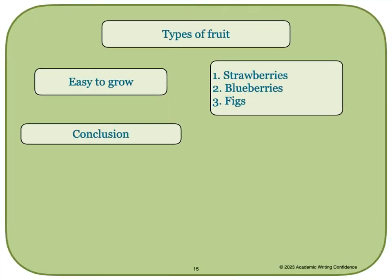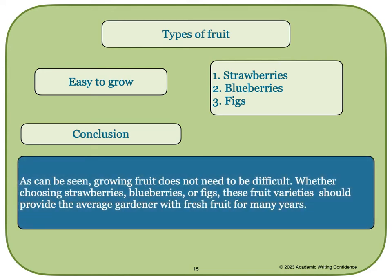Now all you have to do is write your conclusion: 'As can be seen, growing fruit does not need to be difficult. Whether choosing strawberries, blueberries, or figs, these fruit varieties should provide the average gardener with fresh fruit for many years.'